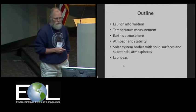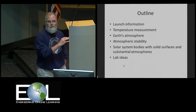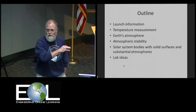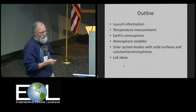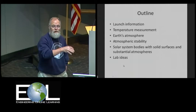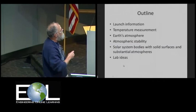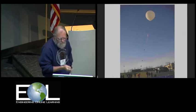So a brief outline. I'll show you a couple of nice pictures of our launch, and then at the end you'll get a couple of fantastic pictures. We'll talk about the temperature measurement, simple thing most of you do on all your flights and what you can extract from it, and what that tells you about the Earth's atmosphere and atmospheric stability. I put in a pedantic derivation in the middle just to keep the physics people happy. Then we'll talk about solar system bodies, the four solar system bodies with solid surfaces and substantial atmospheres, and then a few lab ideas.